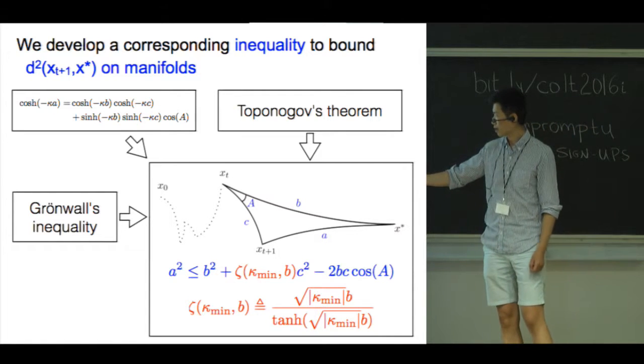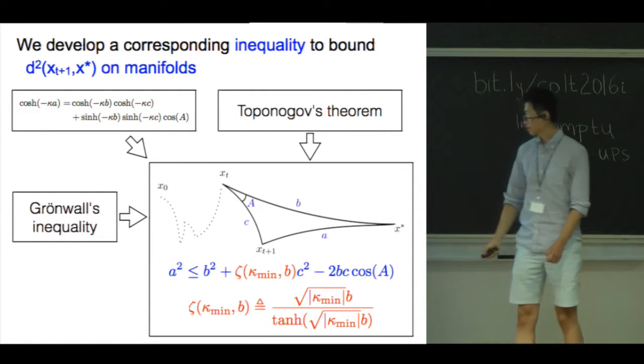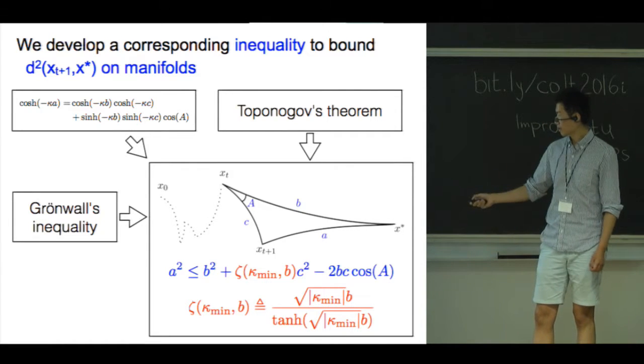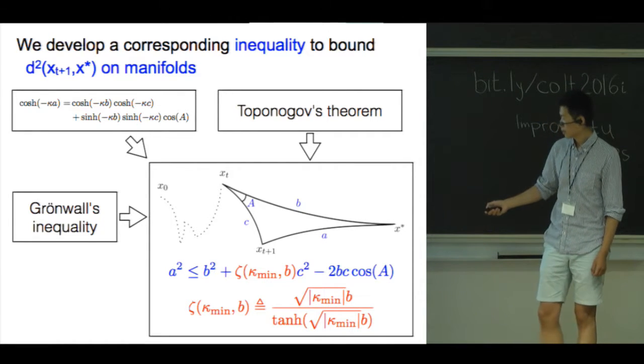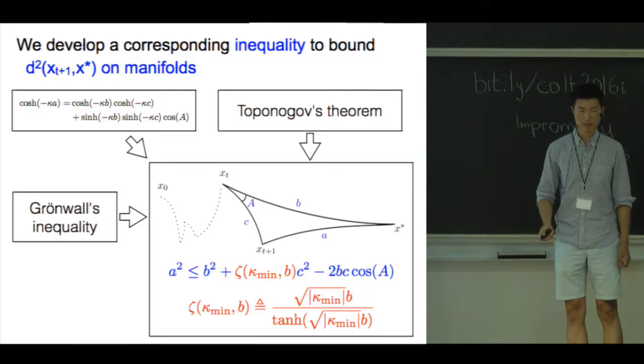Now we compare this inequality with the Euclidean law of cosines. First, note that in non-Euclidean space, we have an inequality. And second, note that we pay the additional price of theta. How much is the theta price?